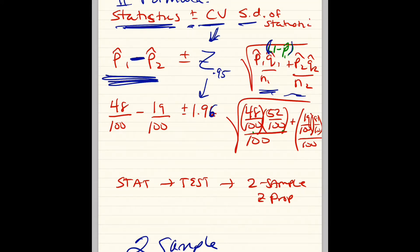Now, plug in your mechanics. 48 over 100 minus 19 over 100 plus or minus 1.96 times all of this stuff here. Remember, P-hat is a fraction or a decimal. Once you set it up, stat, test, two sample, Z prop.